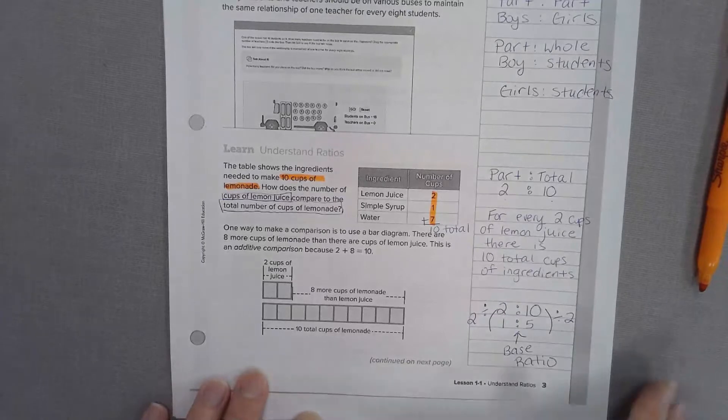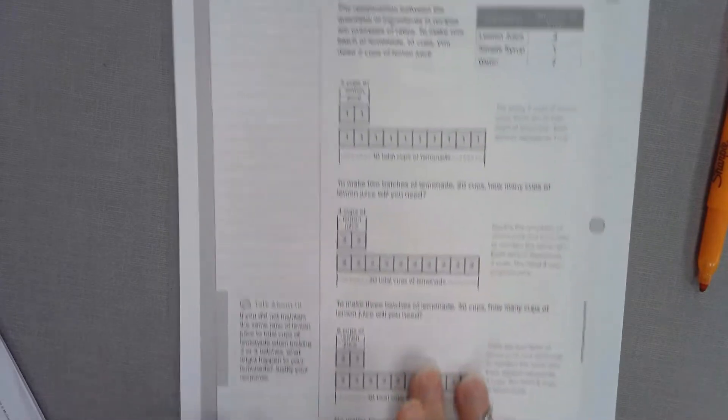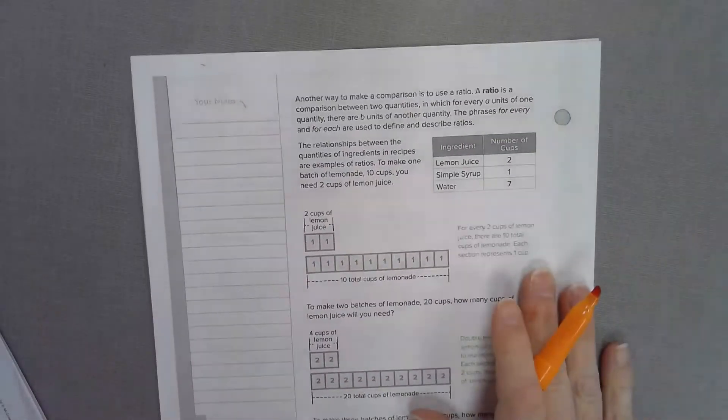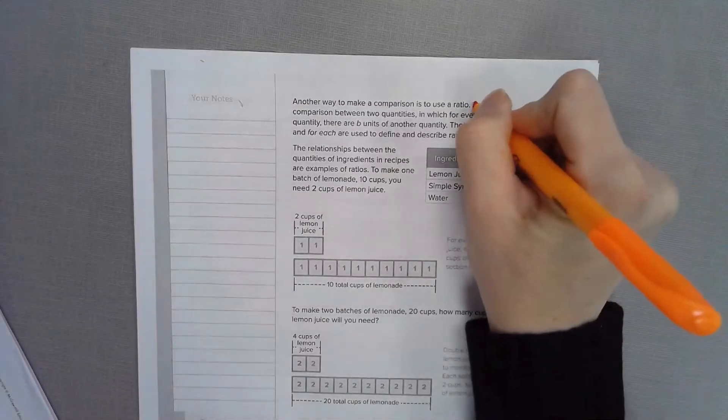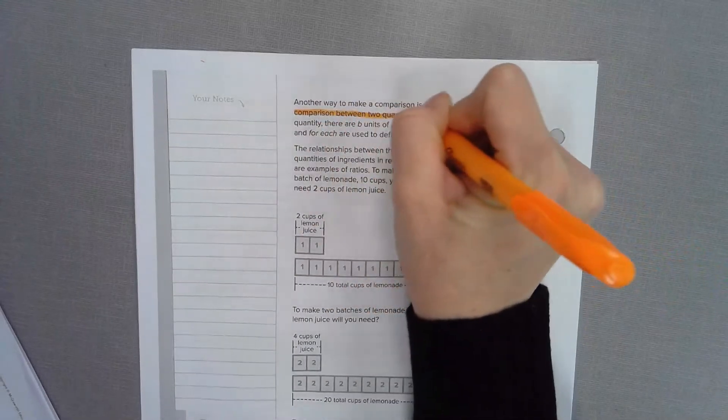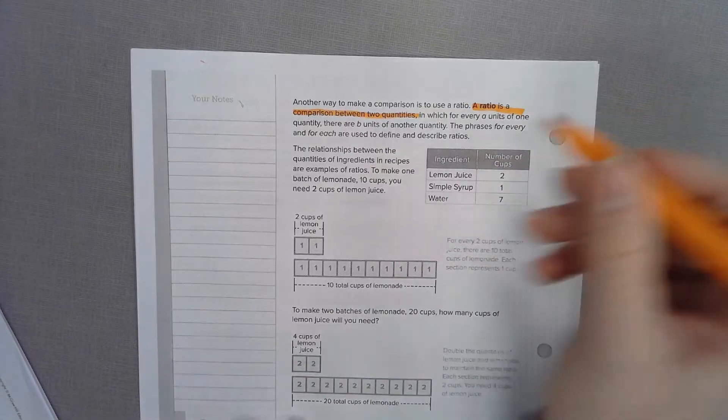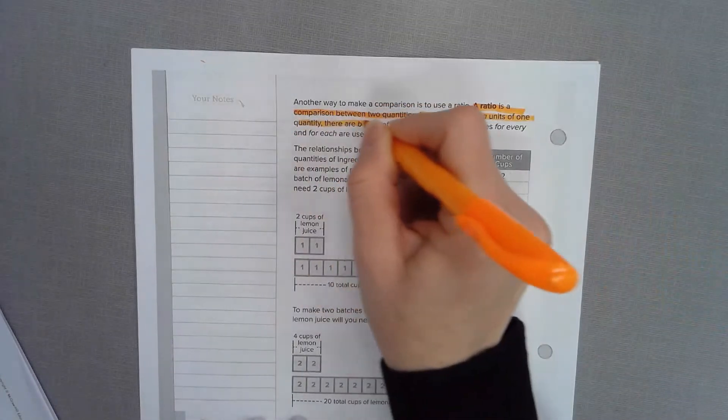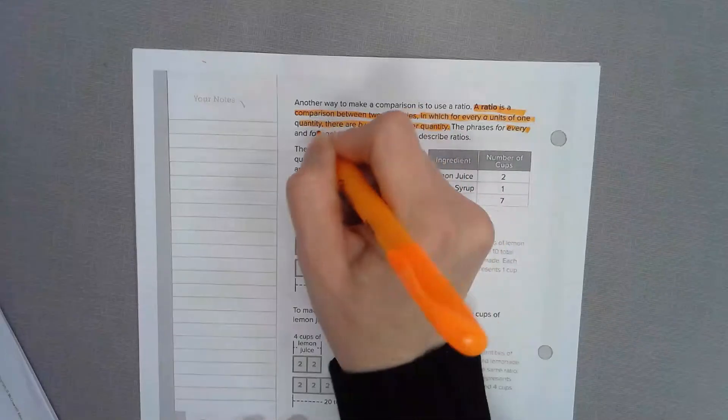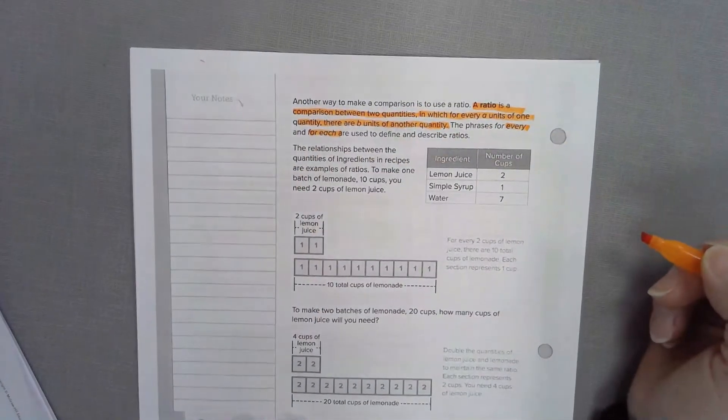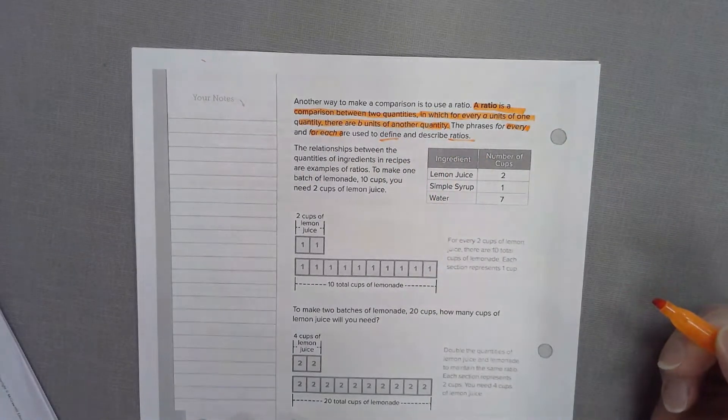Go ahead and flip the page. Another way to make a comparison is to use a ratio. Let's highlight a ratio is a comparison of 2 or more quantities for which for every a unit of one quantity there are b units of another quantity. The phrases for every and for each are used to define and describe the ratio.